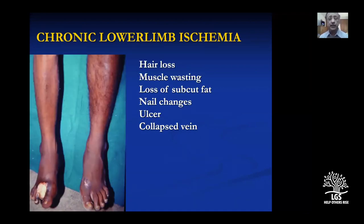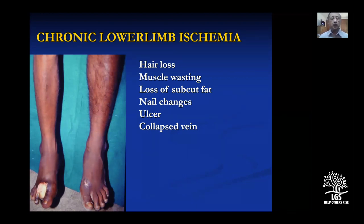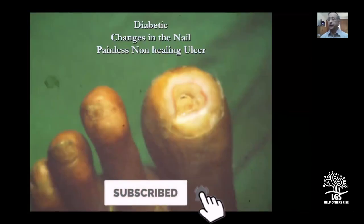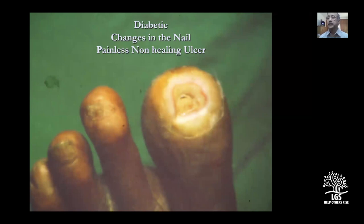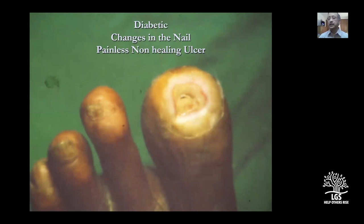A typical picture shows wasted muscle, absent hair, lost subcutaneous fat, nail changes, ulcer, and collapsed veins — all typical features of chronic lower limb ischemia. In diabetic patients, the classical pain may be absent. You may see a patient presenting with numbness and an ulcer: on the big toe, the terminal phalanx is exposed, the nail is missing, nail changes are seen on other toes, there is no granulation tissue, and the patient has no pain due to neuropathy — which is why diagnosis gets delayed.